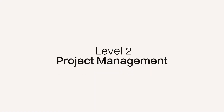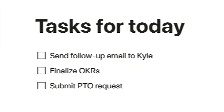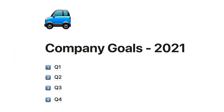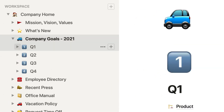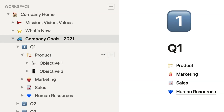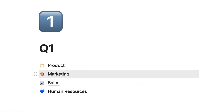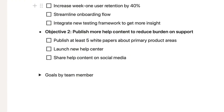Level two is project management. Once your knowledge is organized, you begin building custom workflows for your actual work. This might be where you introduce a task management system, project dashboards, client trackers, or a CRM that matches how your team operates.